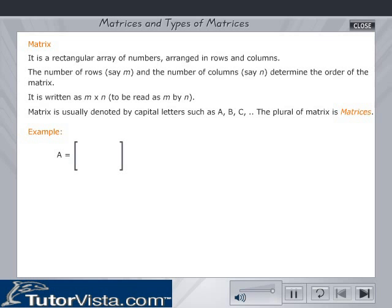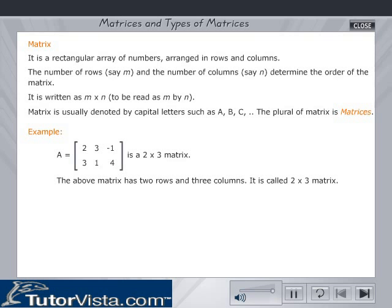Example: A equals matrix 2, 3, minus 1, 3, 1, 4. The above matrix has two rows and three columns. It is a 2 by 3 matrix. Order of a matrix equals number of rows into number of columns, that is 2 into 3.